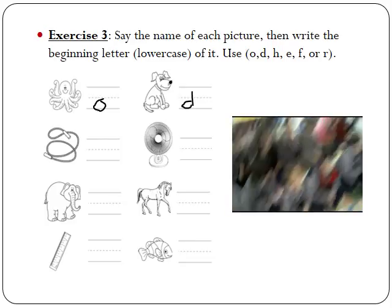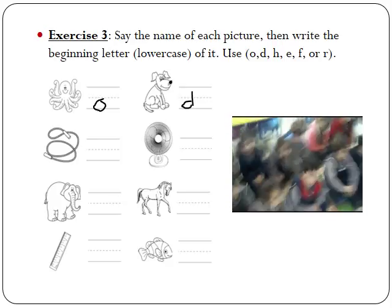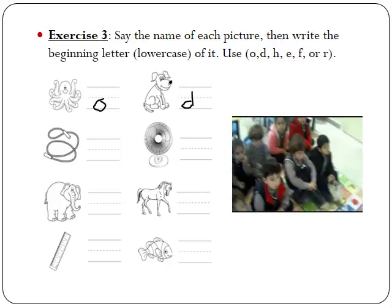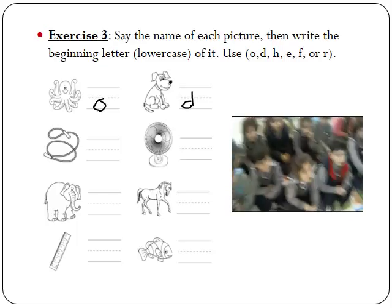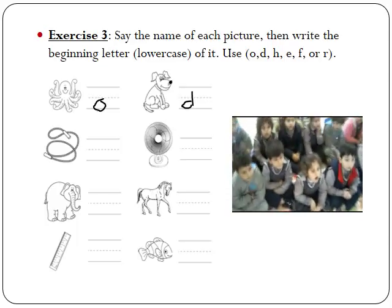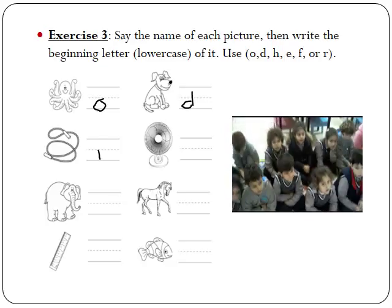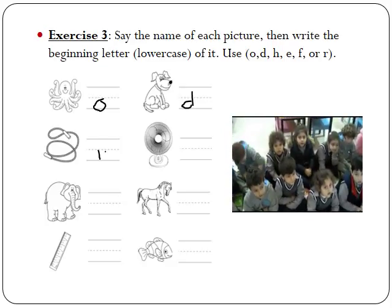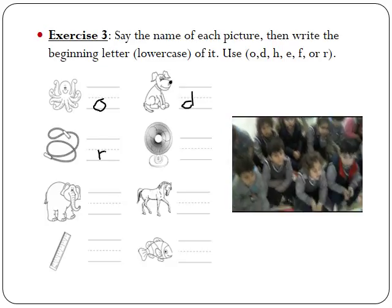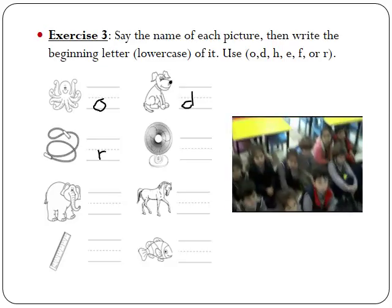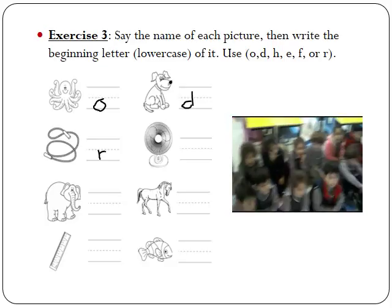Let's move to the third picture. Rope. What letter should I write? R. What about this one? Fan. This is a fan.